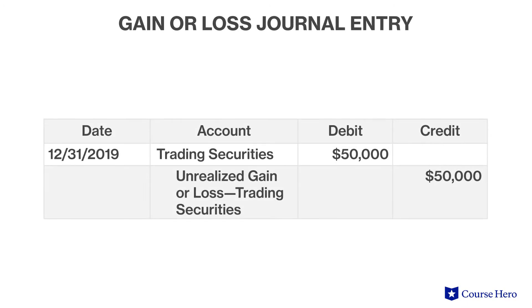Suppose that the $1 million stock investment has appreciated by 5% at the end of 2019. This fluctuation is recorded as an unrealized gain on trading securities, which is included in earnings on the income statement, and then with the corresponding increase to the carrying amount of the trading securities on the balance sheet.